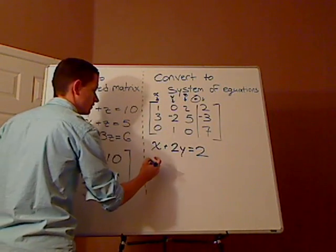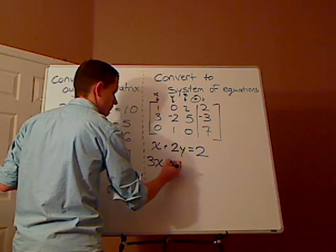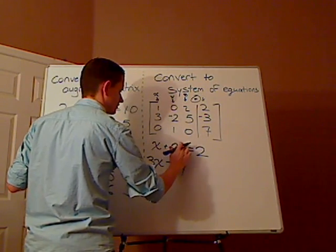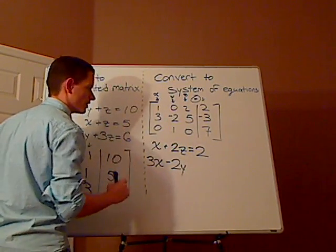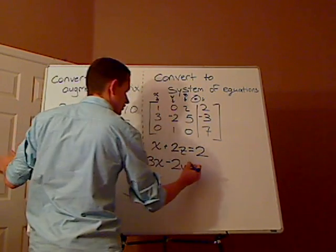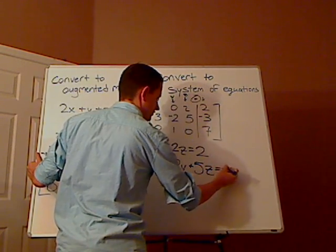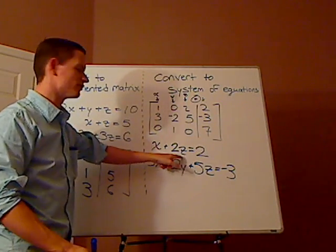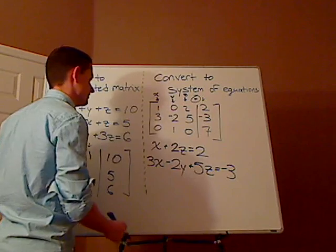Now the second one is very straightforward. You have 3x minus 2y. Actually, this is supposed to be z. Good call, by the way. So you have 2y plus 5z equals negative 3. Yeah, you guys probably spotted that. That was supposed to be a z, not a y.